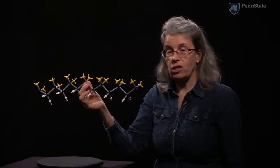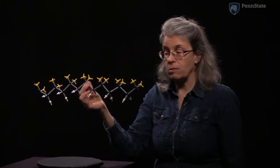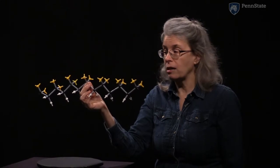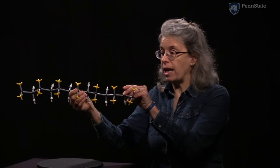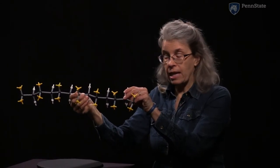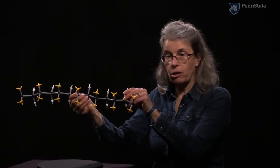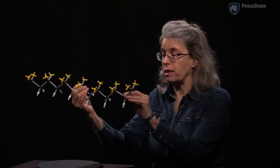This configuration is the zigzag chain, sometimes called the straight chain, and it's called the straight chain because if you put it on end and you look at it exactly at the right orientation, the carbon atoms will make a straight line.